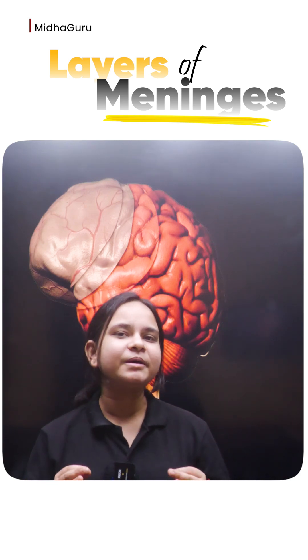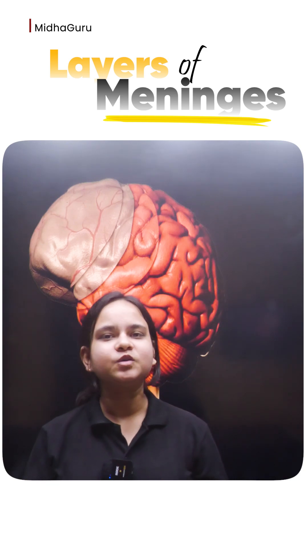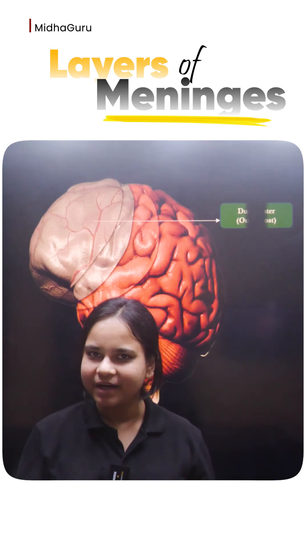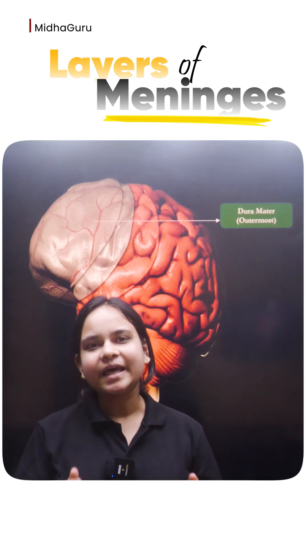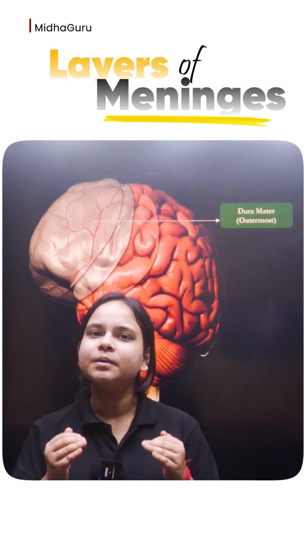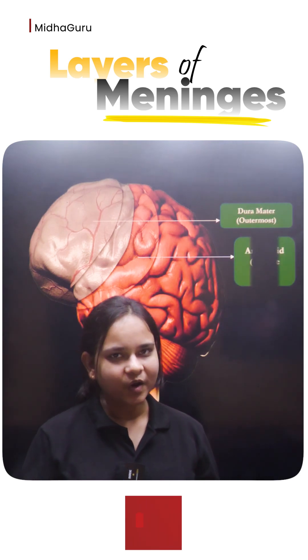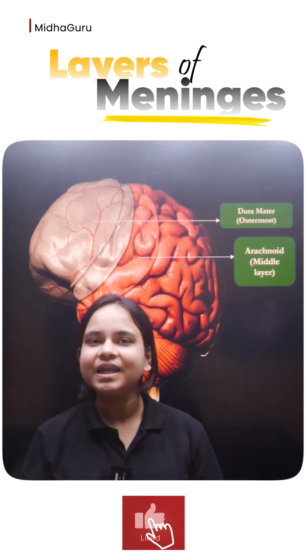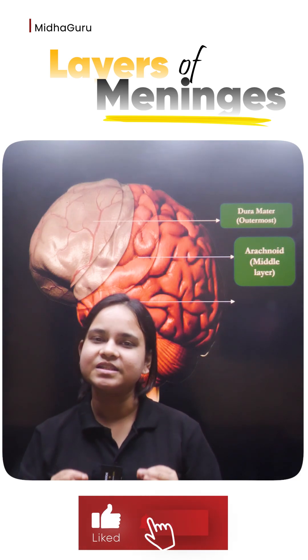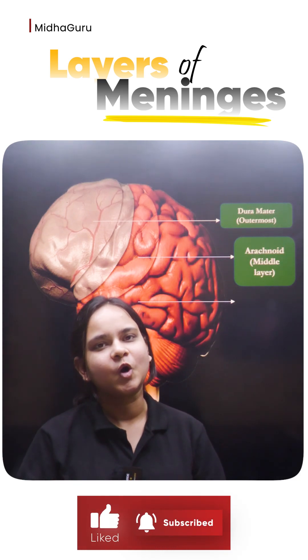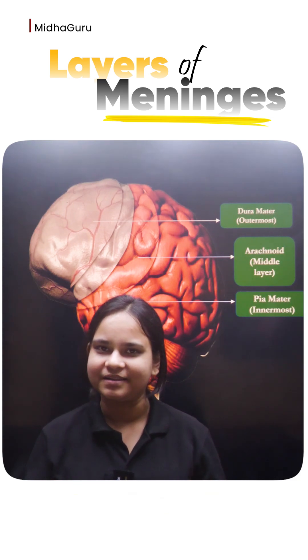Meninges is basically divided into three layers. The outermost layer is called as dura mater. The second or the middle layer is called as arachnoid, and the innermost layer, which is in contact with the brain tissue, is called as pia mater.